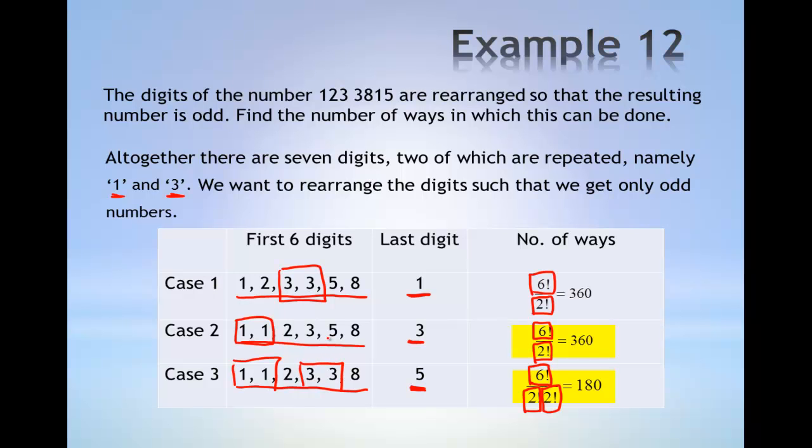The total number of ways in which an odd number is obtained is given by the sum of these 3 cases, which adds up to 900.